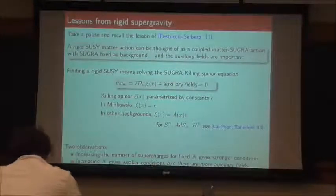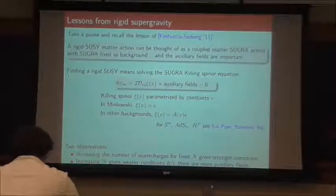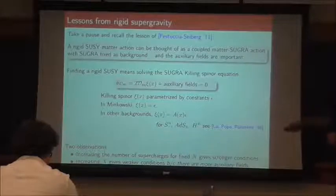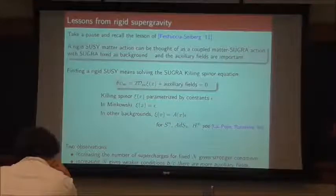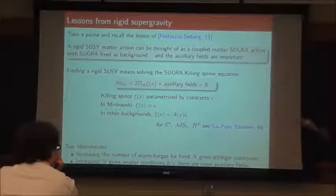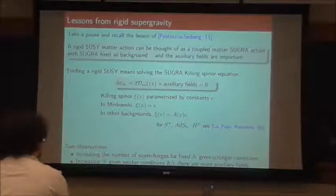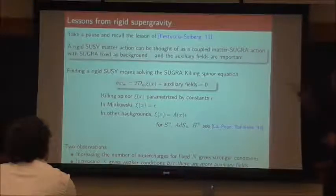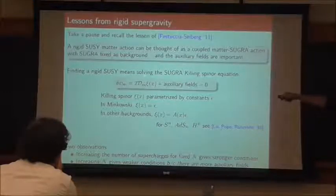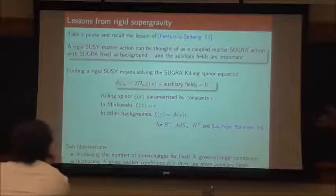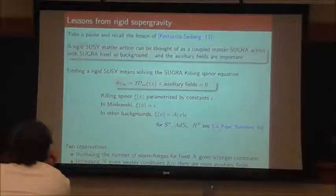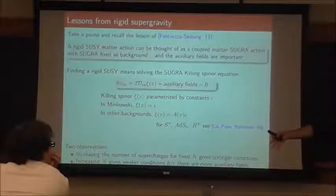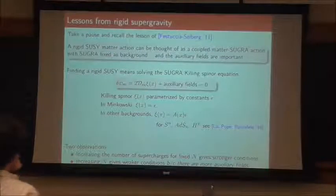I want to make two observations. The first observation is that for a given N, I have a given set of auxiliary fields and a given equation. As I increase the number of supercharges I'm requiring, I get stronger conditions — that should just be obvious. But what is perhaps not obvious is that if I increase N, I'm actually changing the equation itself, because I'm changing the structure of the R-symmetry group, and hence the structure of the auxiliary fields that can appear. So as I increase N, it turns out the structure of the auxiliary fields becomes more complicated.